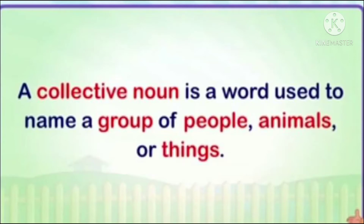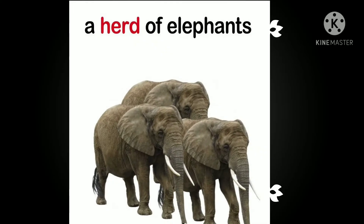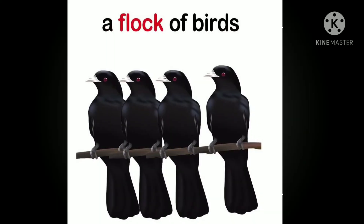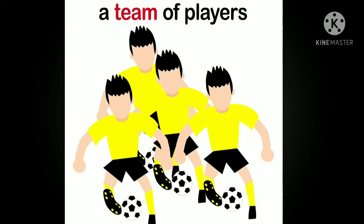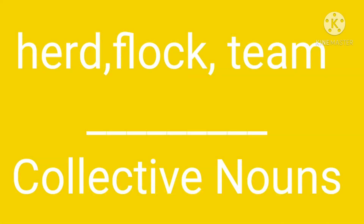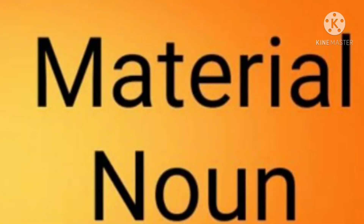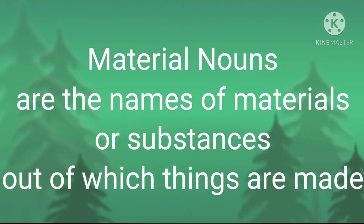Next is collective noun. A collective noun is a word used to name a group of people, animals, or things. Collective noun kya hota hai? Kisih bhi people, animal, or thing ka group. For example, a herd of elephants, a flock of birds, a team of players. So here herd, flock, team are collective nouns.